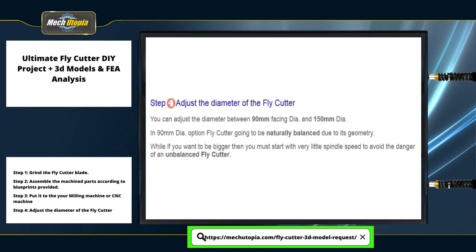Step 4: adjust the diameter of the fly cutter. You can adjust the diameter up to 90 mm, and the fly cutter will be naturally balanced due to its geometry. If you want a larger diameter, start with very low spindle speed to avoid the risks associated with an unbalanced fly cutter.